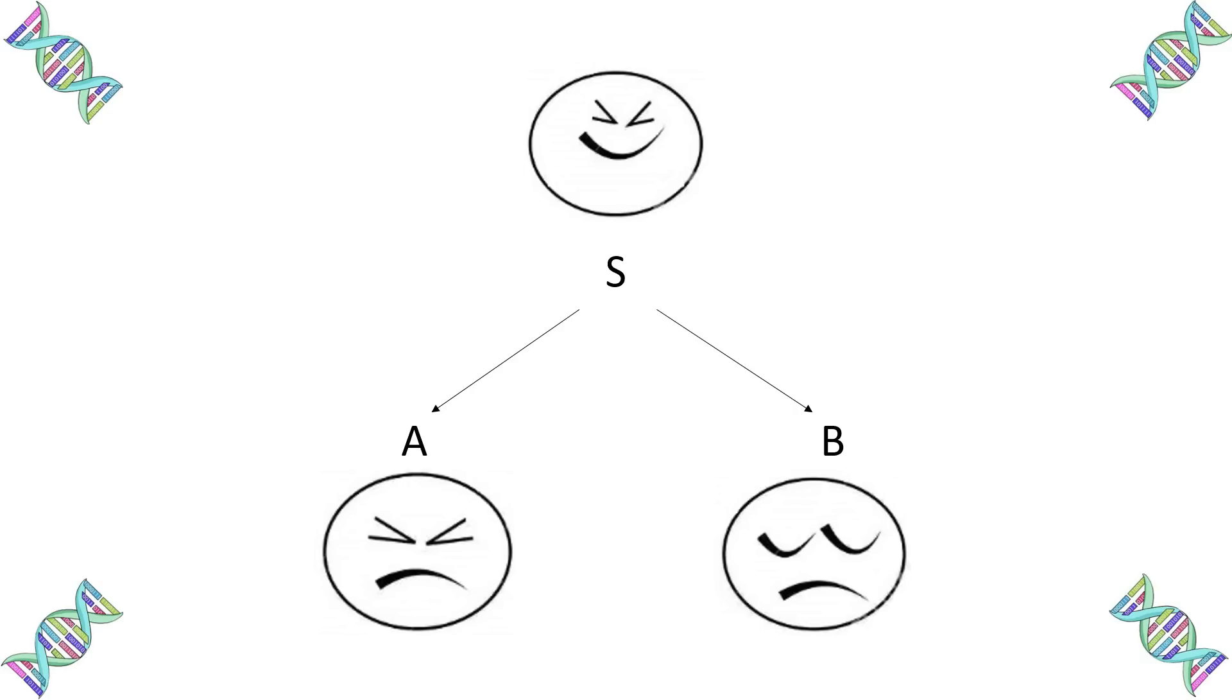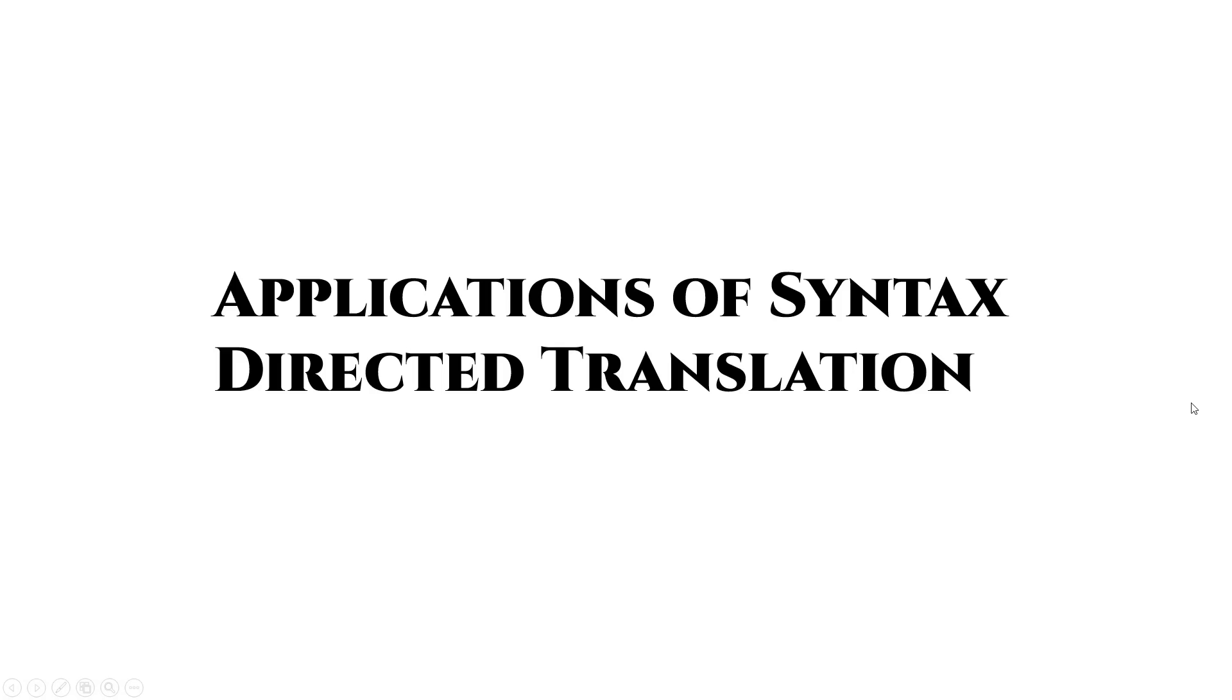To simply put, the child node can only get its inherited value from its parent and sibling nodes. For our next topic, we have applications of syntax-directed translation.